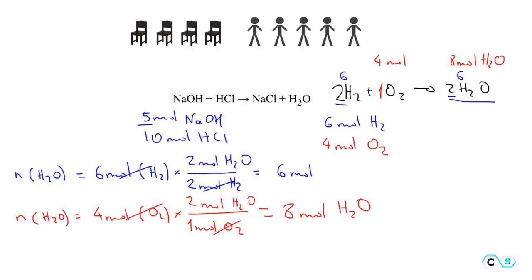Comparing the results: oxygen gives 8 moles of H₂O and hydrogen gives 6 moles of H₂O. Hydrogen obviously gives less water, so hydrogen is the limiting reactant. It's not about which reactant is in smaller quantity — it's about which one gives you less product.